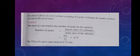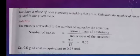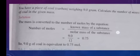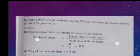The given mass is converted to number of moles by this equation. Since we need to calculate the number of moles, the equation is: number of moles = given mass of substance ÷ molar mass of substance. The given mass is 9 grams. The molar mass of carbon (present in coal) is 12 g/mol. So, 9 ÷ 12 = 0.75 moles. Therefore, 9 grams of coal equals 0.75 moles.